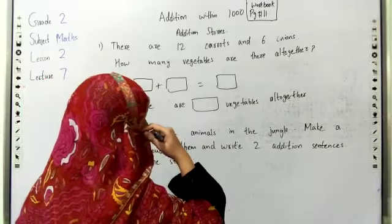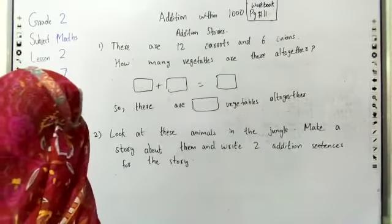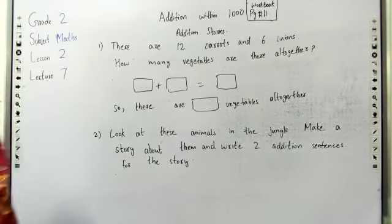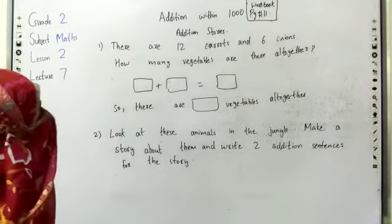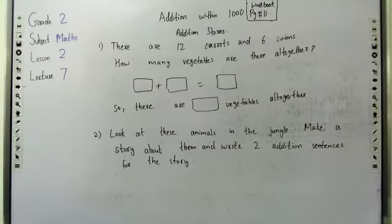Exercise on page number 11 of the workbook. Question number one is: there are twelve carrots and six onions. How many vegetables are there together? If you look in the book, you will get twelve carrots and six onions. So we will make them addition sentences.